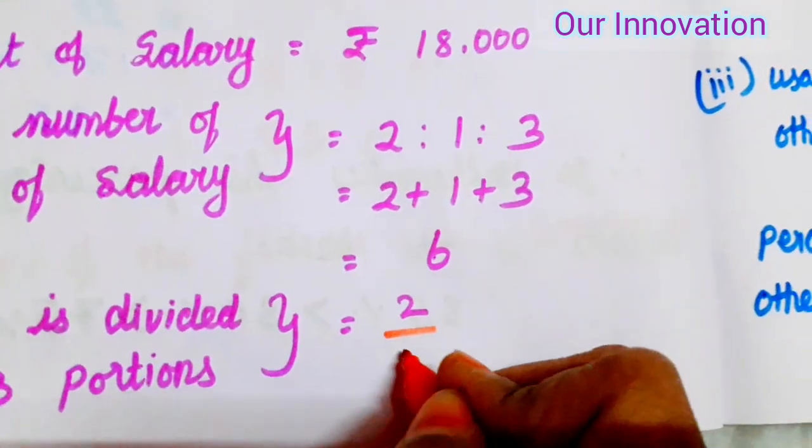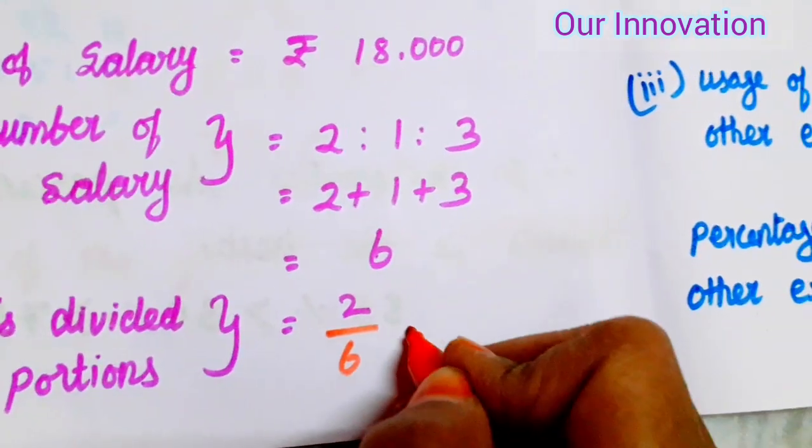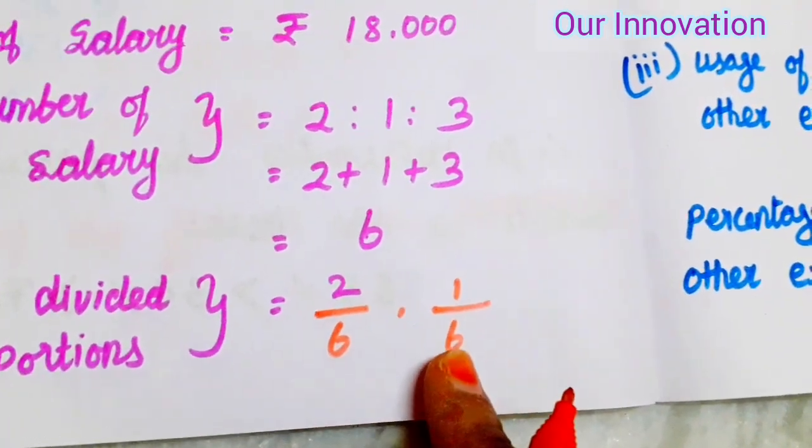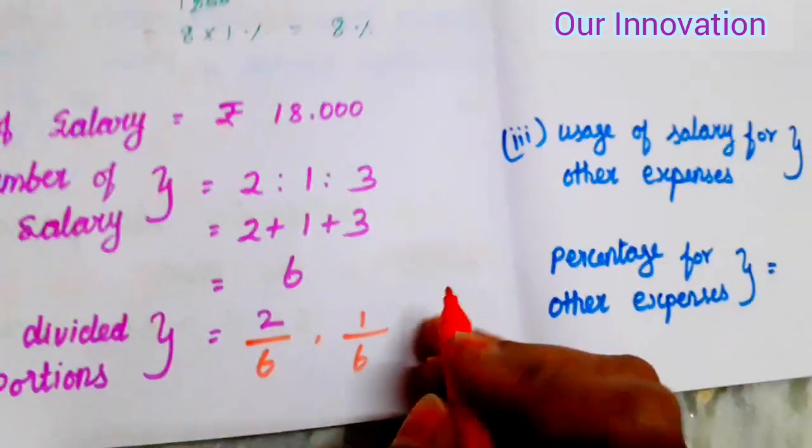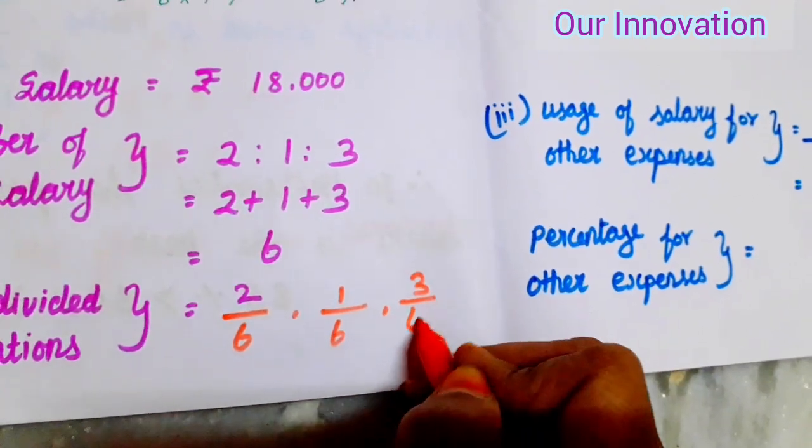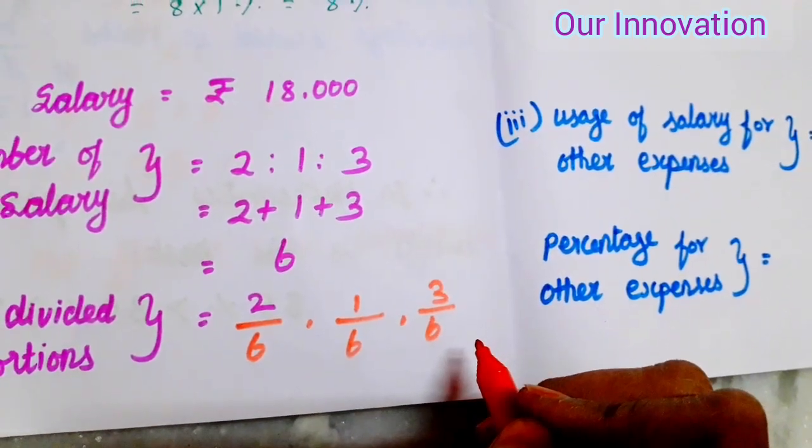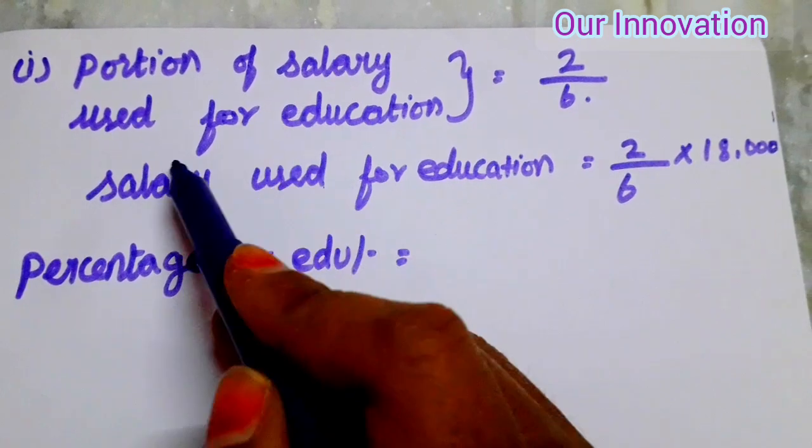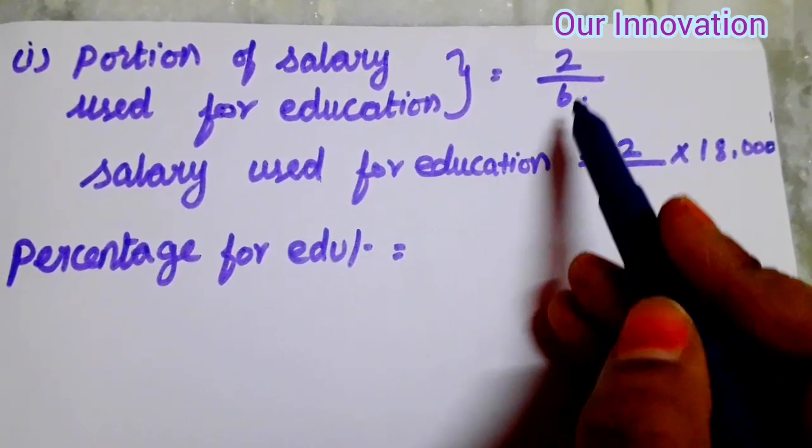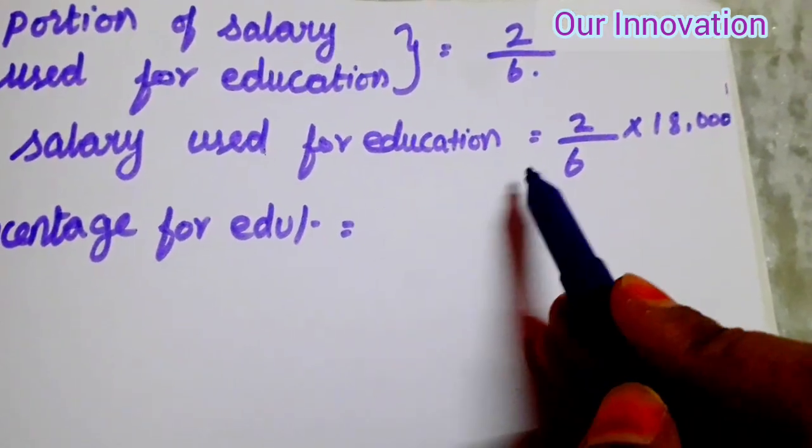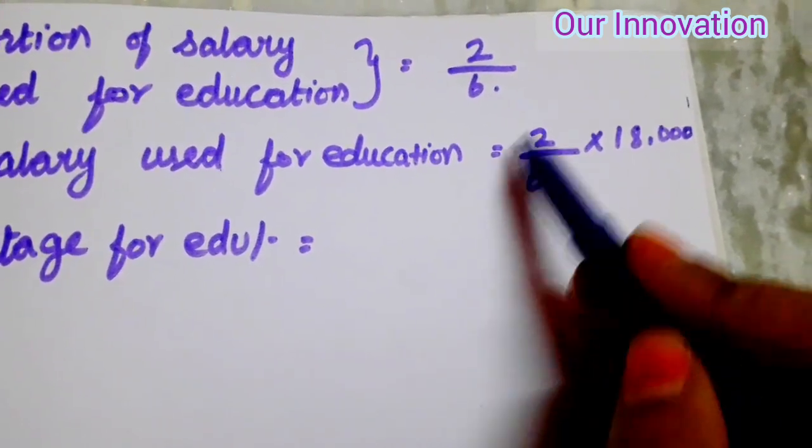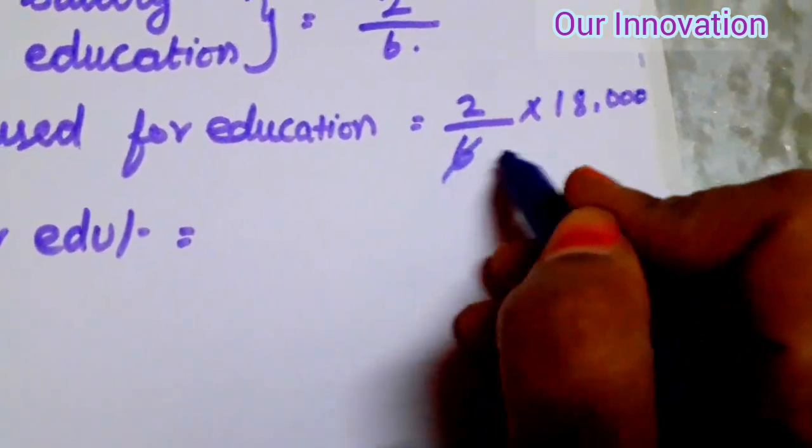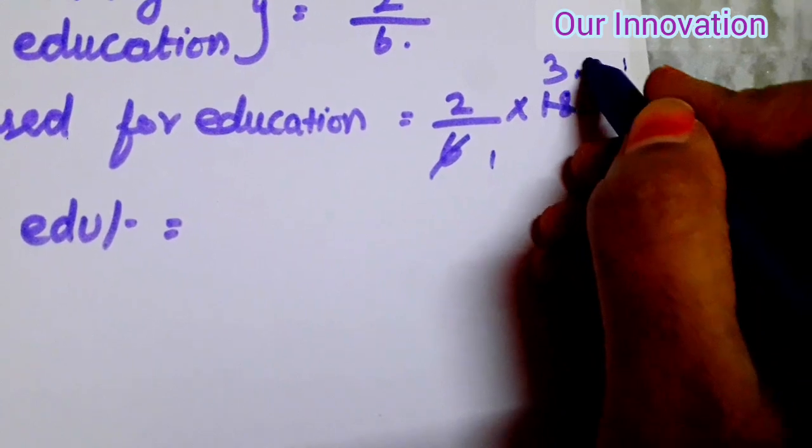So 2 by 6 for education, 1 by 6 for savings, and 3 by 6 for other expenses. First, portion of salary used for education is equal to 2 by 6. Salary used for education equals 2 by 6 into 18,000. 1 into 6 is 6, 6 into 3 is 18, so that's 18,000.